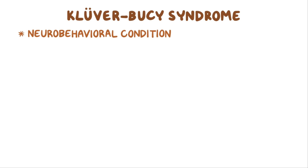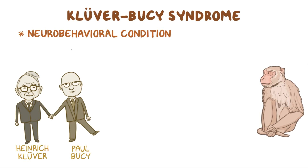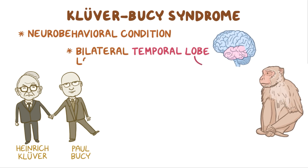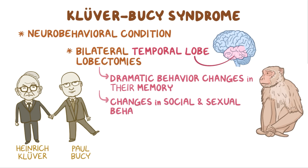Kluver-Busey syndrome is a neurobehavioral condition first observed in the 1930s by Heinrich Kluver and neurosurgeon Paul Busey. They discovered that monkeys that had bilateral temporal lobe lobectomies developed dramatic behavior changes in their memory, as well as their social and sexual behaviors. In retrospect, it's not surprising that having a significant portion of the brain removed caused behavior changes in monkeys.